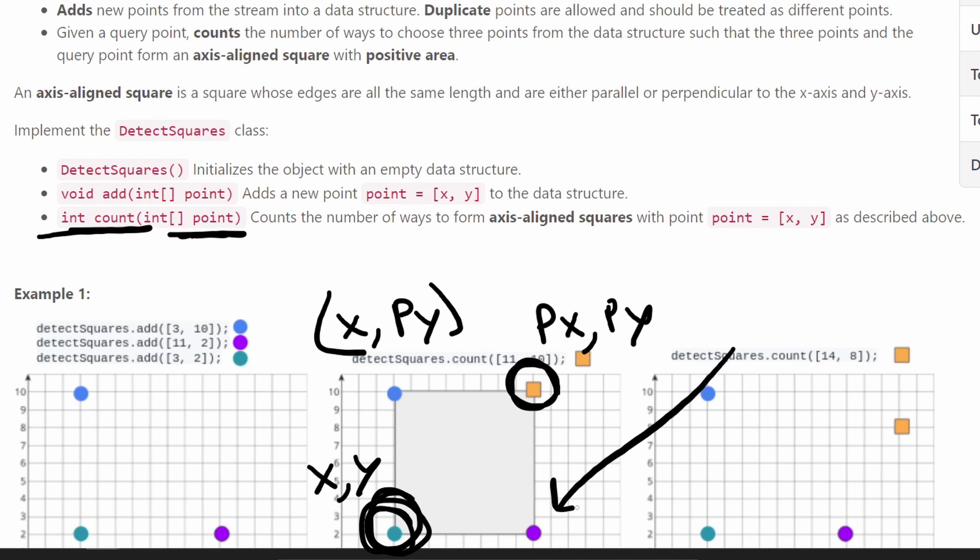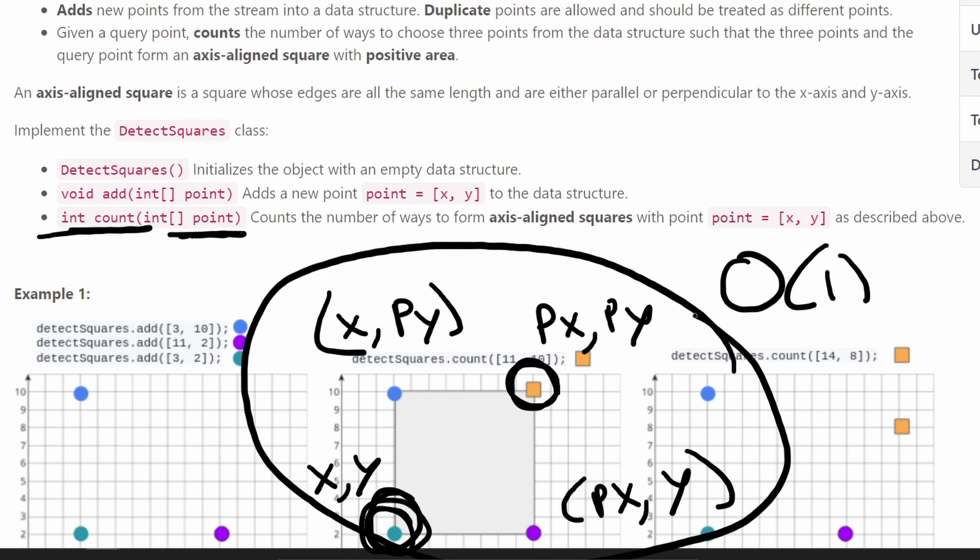How do we check the bottom right point? The exact opposite, right? We take PX and Y and check, does this exist in our hash map, right? Since we're using a hash map, that'll be an O of one lookup, right? So that's really easy. So then we can instantly check if we can form a square or not.